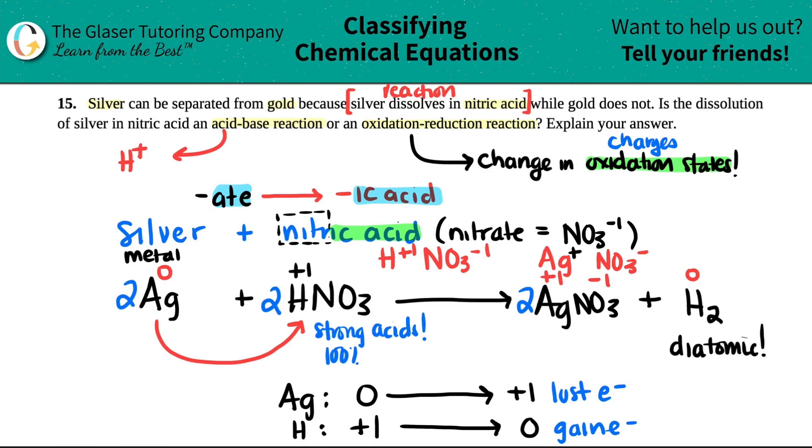So that's all I got for you. So, you know, is this dissolution one or the other? It's an oxidation reduction reaction, and then explain your answer. Just talk about what we just did, about how the silver and the hydrogen change its oxidation states from the reactants to the products.